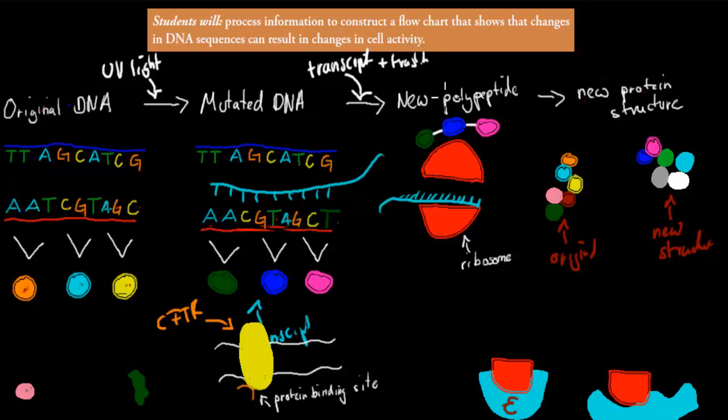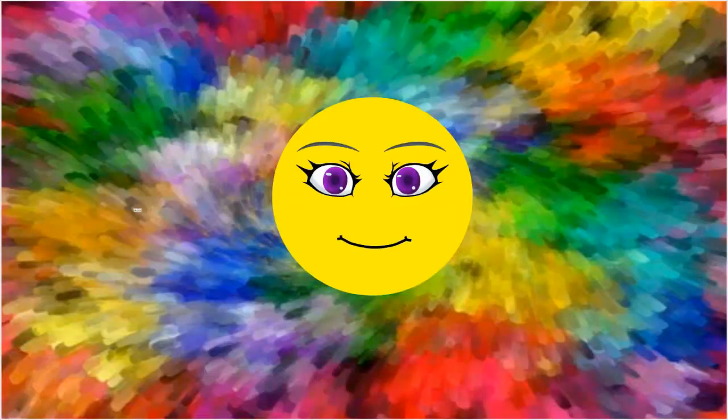So that new sequence has been transcribed and translated to produce a polypeptide chain. This is different. This new polypeptide chain will lead to a new protein structure. And a new protein structure would lead to a change in cell activity. Sometimes it's bad, but it can sometimes also be good. So most mutations are bad, but there are some good mutations as well. That was the main gist of this dot point. You should know how to construct one of these flowcharts and also obviously be able to understand them as well. But hopefully that was useful. Thank you for watching.